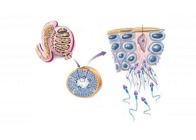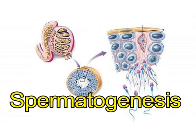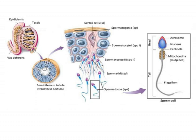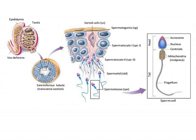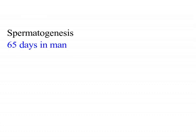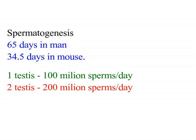Hello friends, today we are going to discuss spermatogenesis. Spermatogenesis is defined as the process of formation of sperms or spermatozoa from spermatogonial cells present in the wall of seminiferous tubules of the testes. Spermatogenesis takes about 65 days in man and 34.5 days in mouse. Each testis produces about 100 million sperms per day.